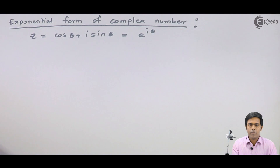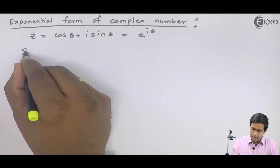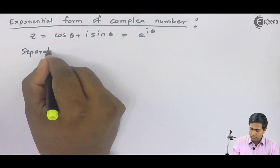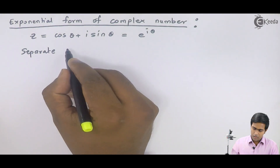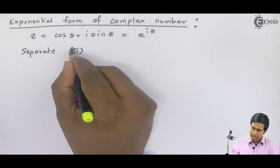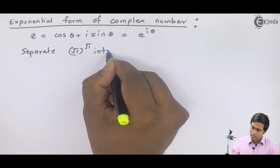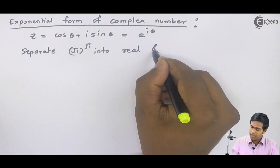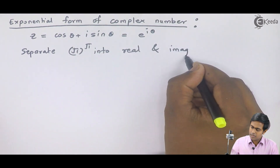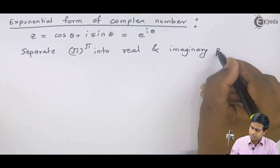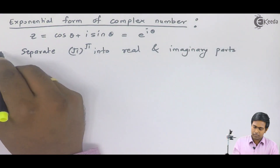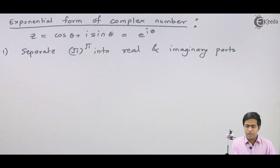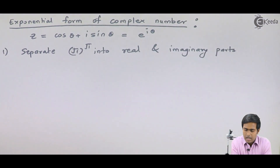Let us take a problem where we will apply this concept. The first problem is: separate √i raised to √i into real and imaginary parts. Here you can observe that in the base we have a complex number and in the power we also have a complex number.